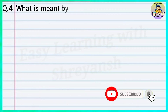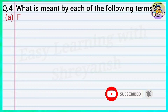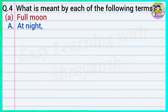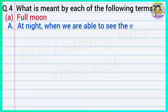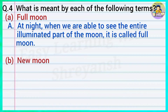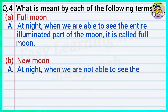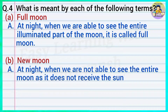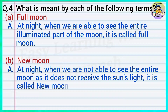Question number four: What is meant by each of the following terms? A — full moon: At night when we are able to see the entire illuminated part of the moon, it is called full moon. B — new moon: At night when we are not able to see the entire moon as it does not receive the Sun's light, it is called new moon.